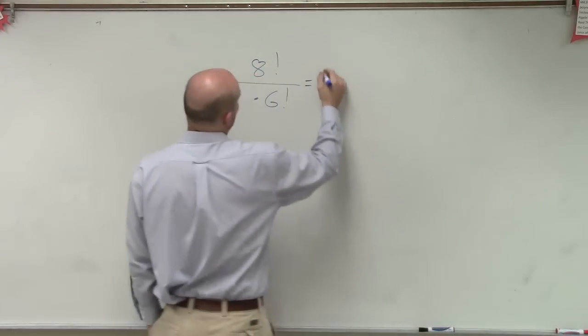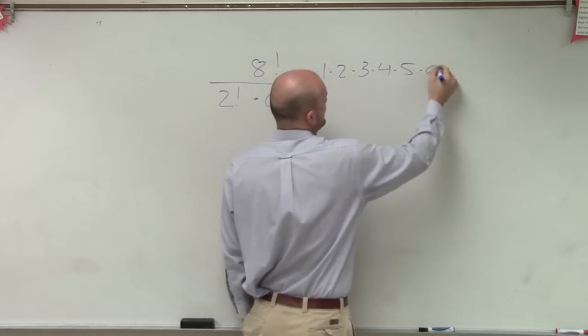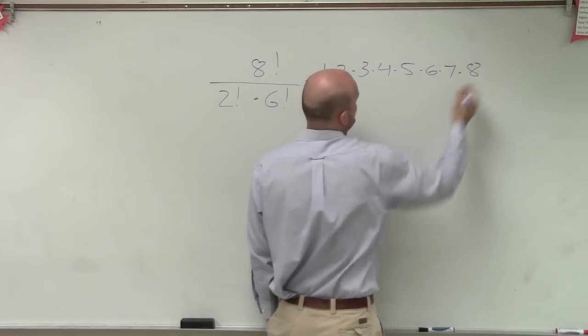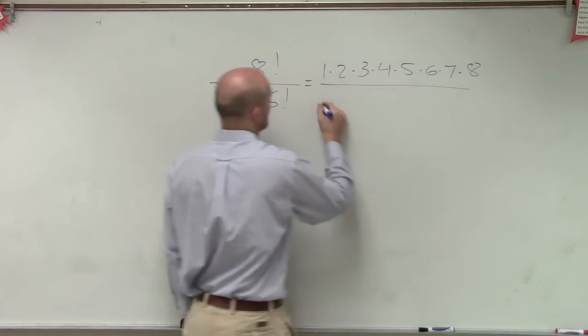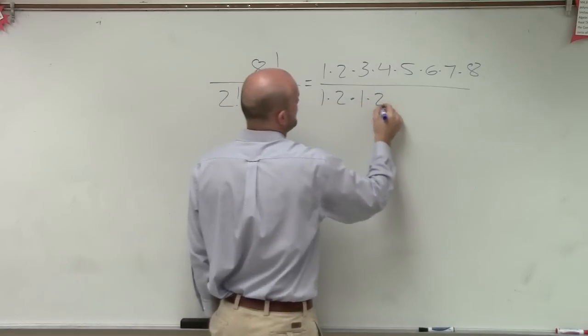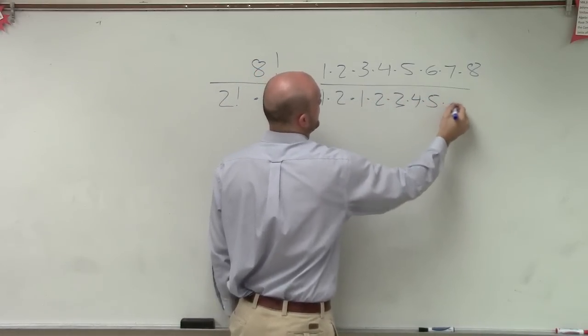Let me show you what I mean. Over here, I have 1 times 2 times 3 times 4 times 5 times 6 times 7 times 8, right? Then on the bottom, I'm doing 1 times 2 times 1 times 2 times 3 times 4 times 5 times 6.